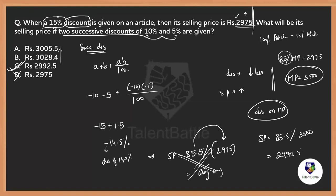So the approach is: first find the successive discount using the formula to get the overall effective discount — here 14.5%, meaning the article is sold at 85.5% of the marked price. Then use the first condition to find the marked price, and finally apply 85.5% to that marked price to get the final selling price. Hope that is clear.